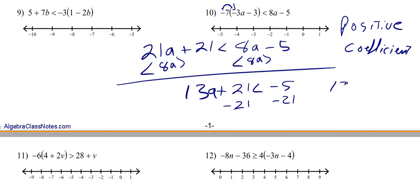So now we've got 13a is less than negative 26. So you've got 13 times a. What's your inverse operation of multiplication? It's division, so we're dividing both sides by a positive 13. So what we know is a is less than negative 2.